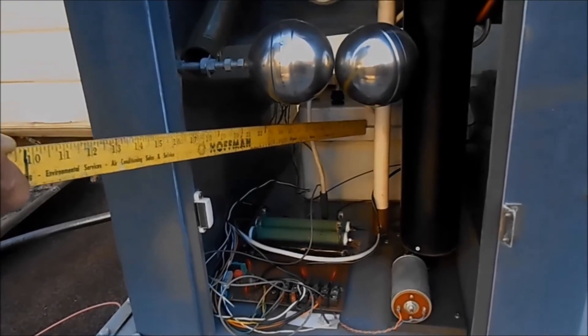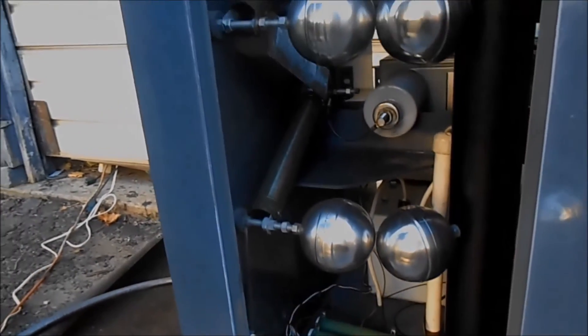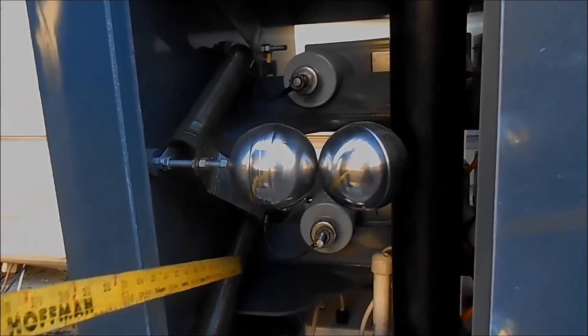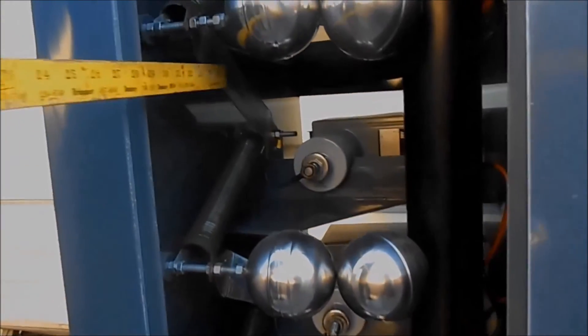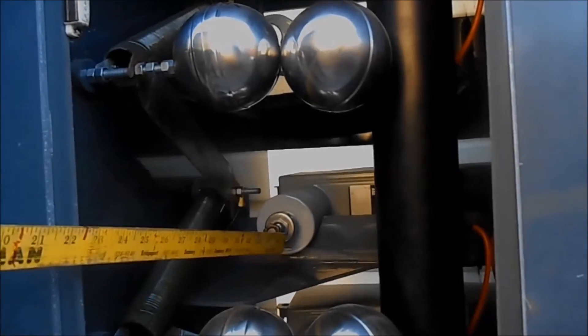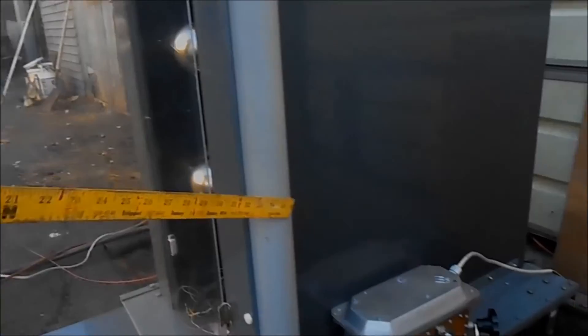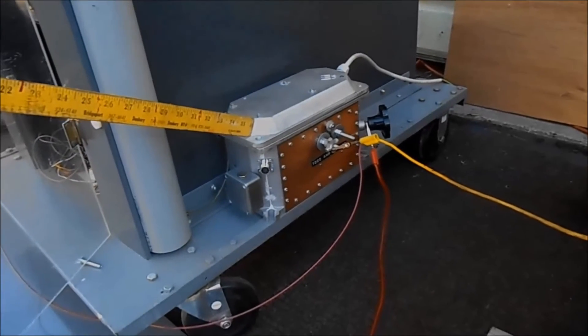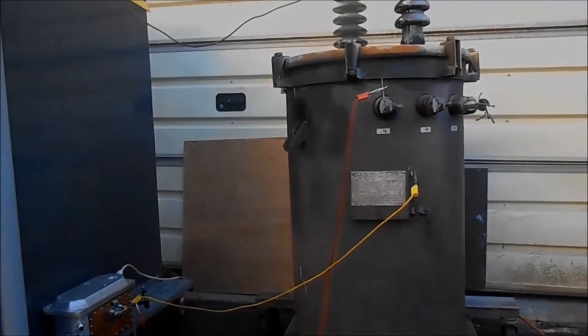Inside the impulse generator we have a power supply, tail resistors, front resistors and a capacitor bank, high voltage divider and a digitizer with shunt.